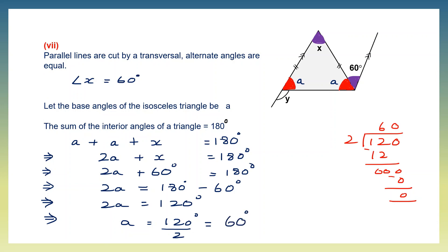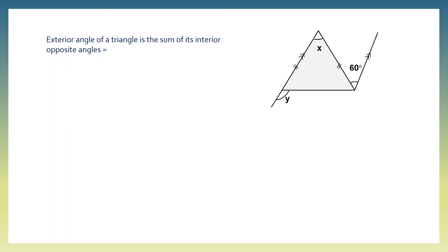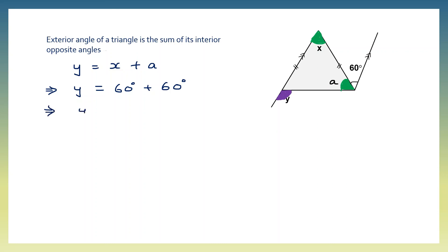Now to find angle y, using the exterior angle property: the exterior angle of a triangle equals the sum of its interior opposite angles. Angle y equals x plus a, which is 60 plus 60, giving us 120 degrees. So x equals 60 degrees and y equals 120 degrees. We will stop here and continue with remaining questions in the next video.